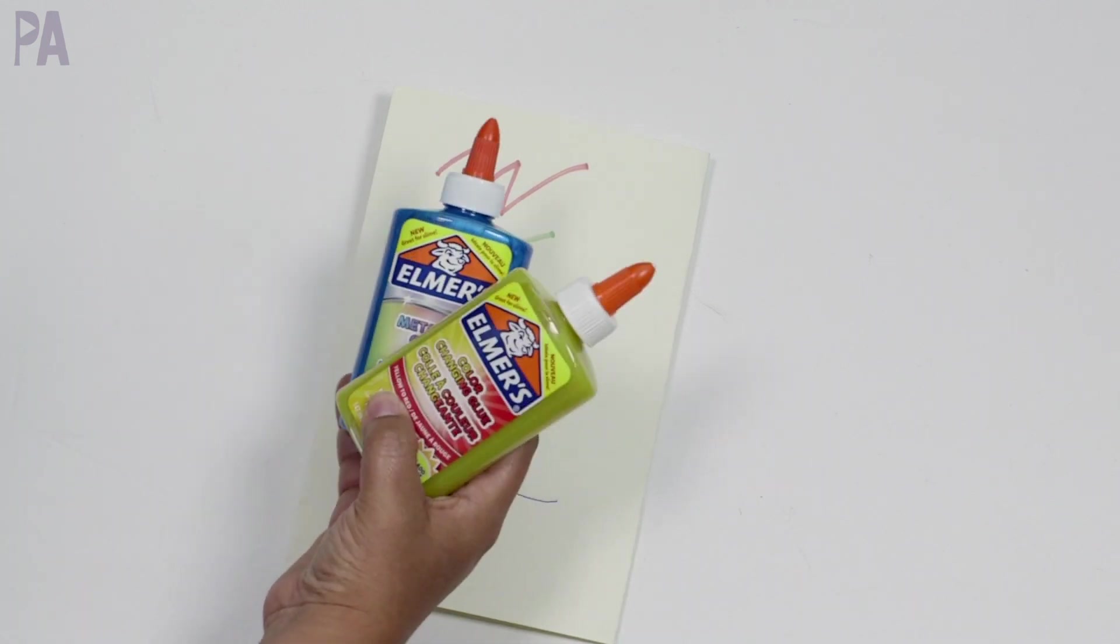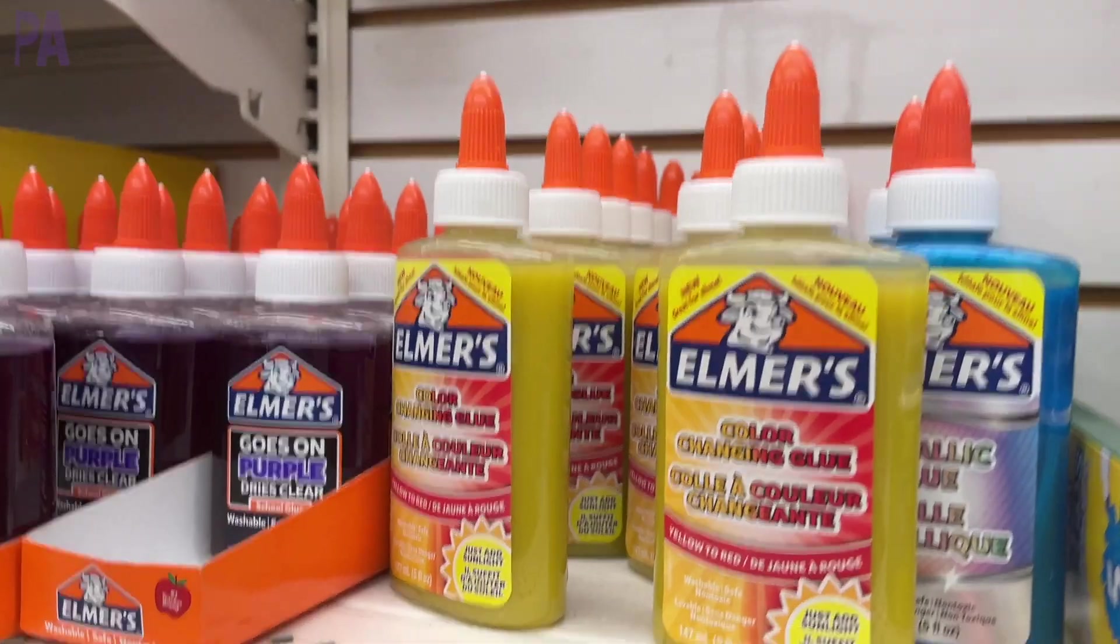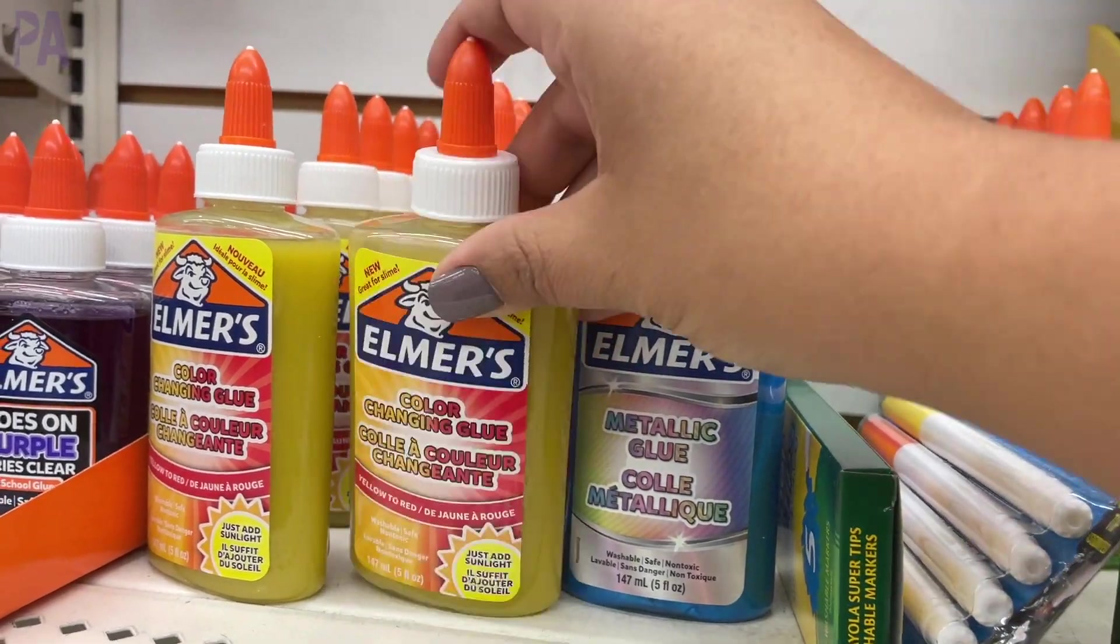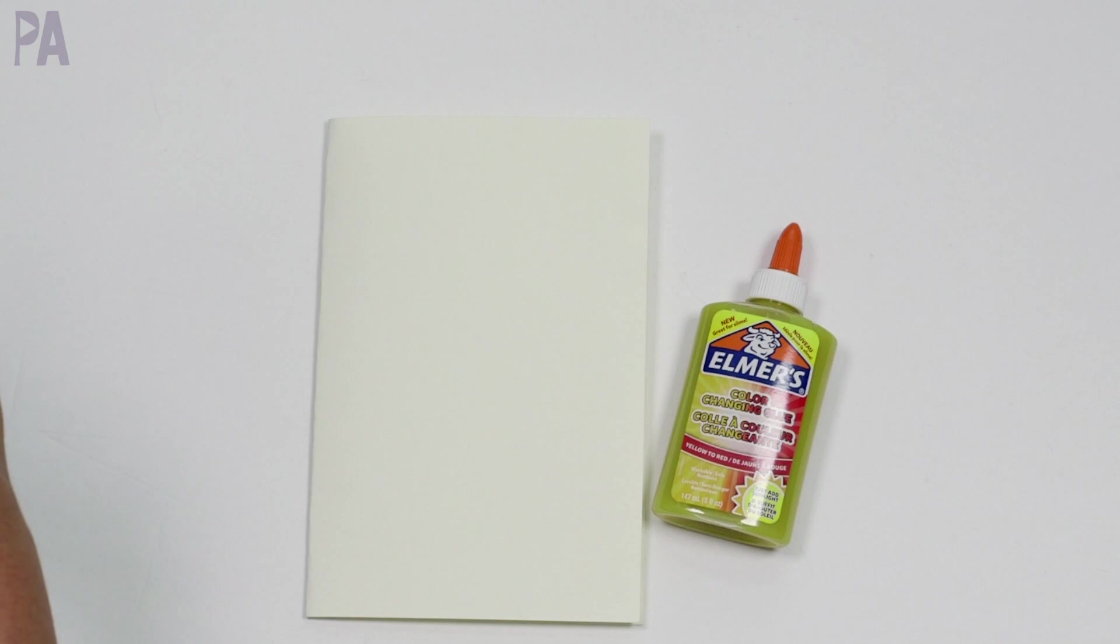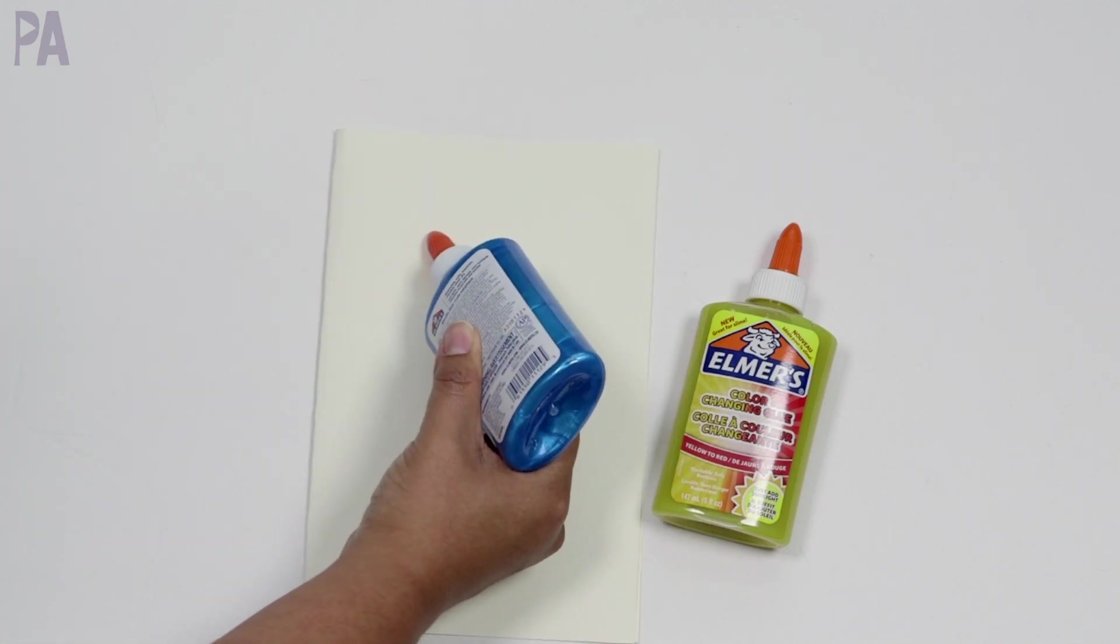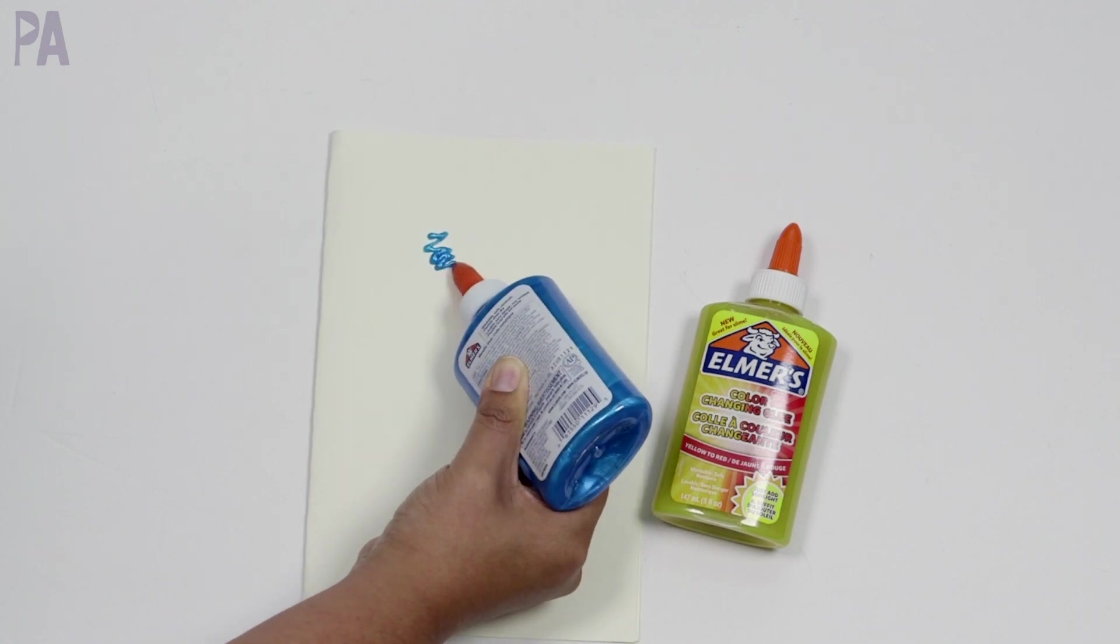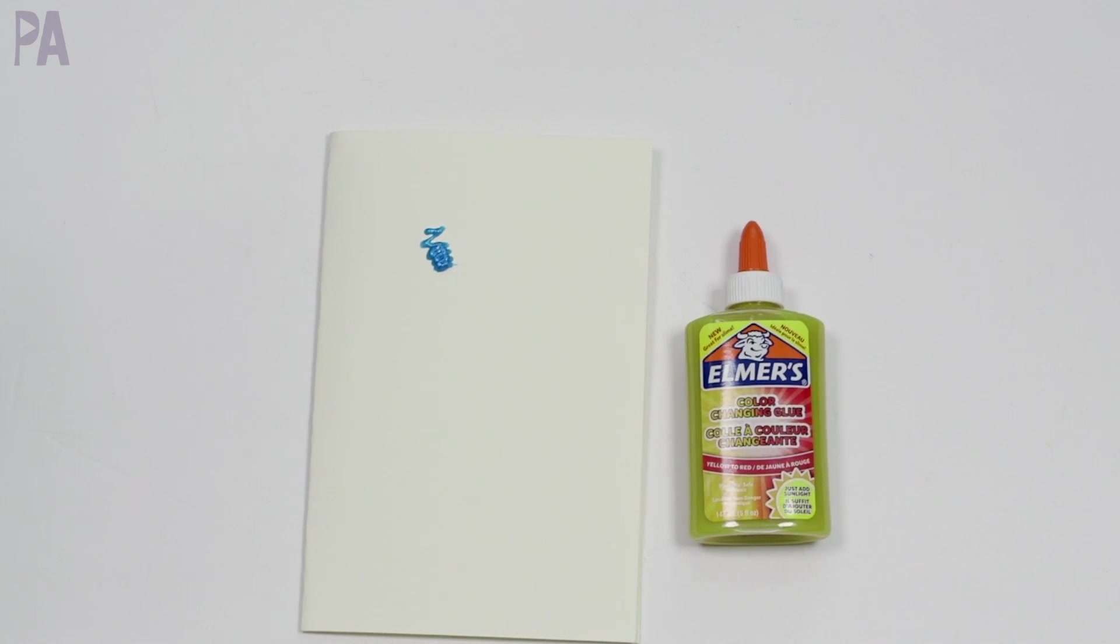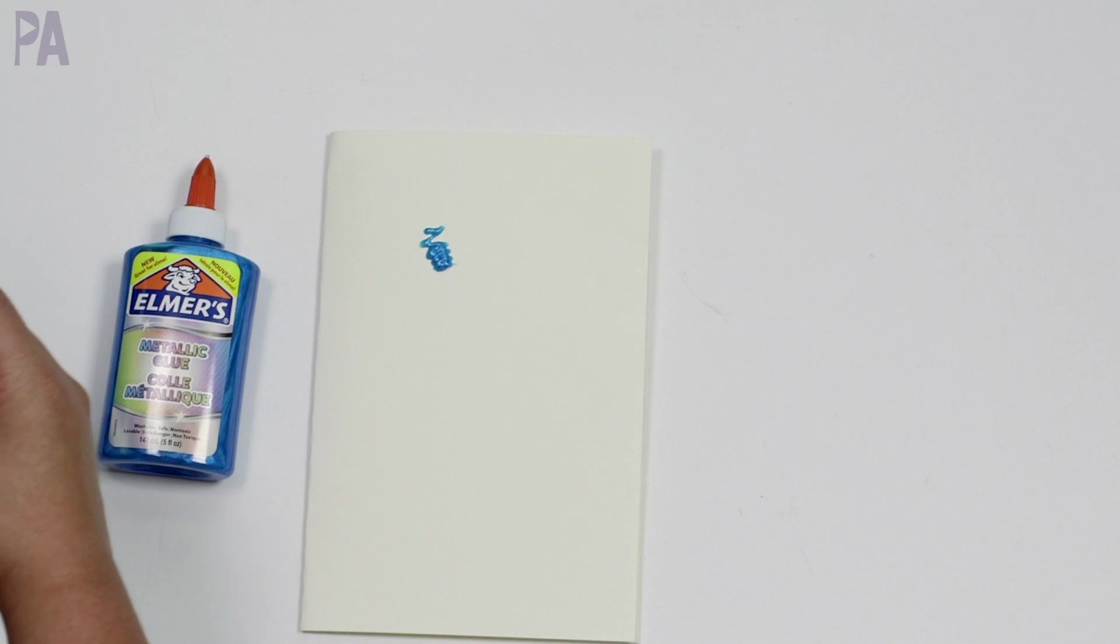So we have two glues to try. We have the Elmer's metallic glue and then the color changing glue. So this one's supposed to turn from yellow to red in the sun. This one's just a really pretty shimmery metallic. And I've tried different Elmer's glues before and I've had really good luck with them. These are mostly I think made to do all kinds of pretty slime. But I'm just going to demo them here on the paper and let them kind of dry a little bit just to kind of see how they look. So there's the metallic one.